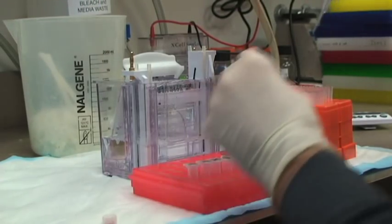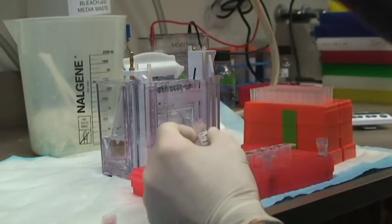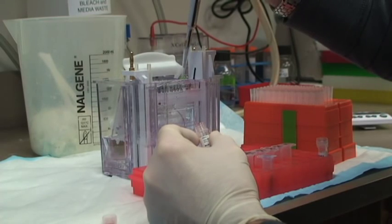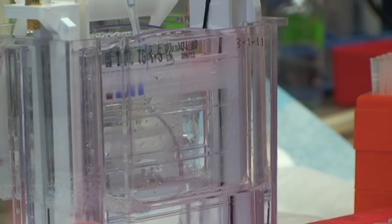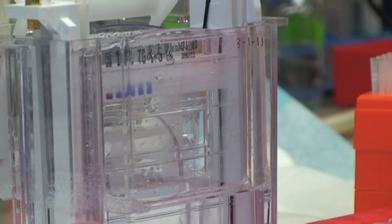When would you use a native gel, a non-denaturing gel? You can see protein interactions sometimes. Also, you could, in theory, see conformational changes. But most Western blots are done with denaturing SDS gels.